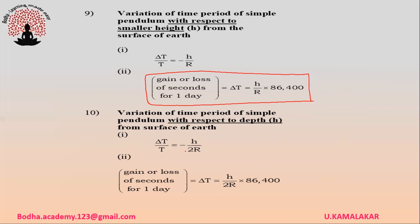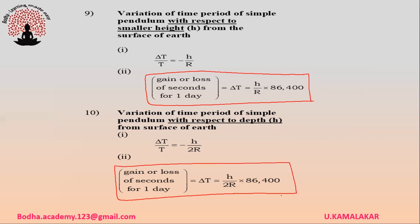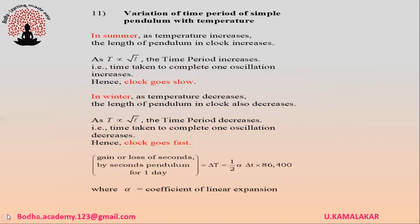With respect to depth h from the surface of the Earth, the gain or loss of seconds for one day is given as (h/(2R)) × 86400 seconds, where R is the radius of the Earth.